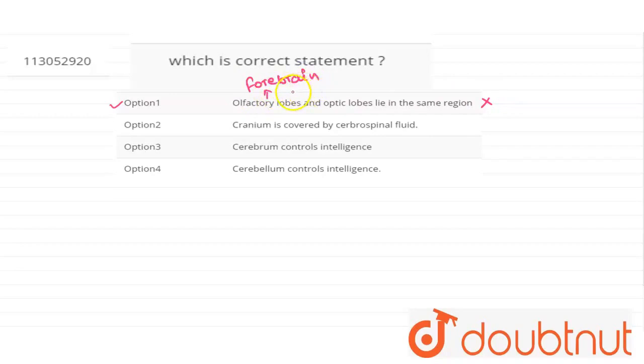Forebrain means the forebrain region of the brain. And if we talk about optic lobe, then this optic lobe is present behind the eyeball. So the locations of these two are quite different.